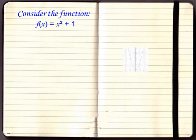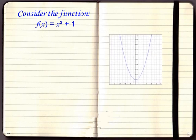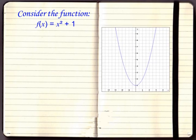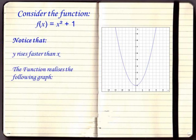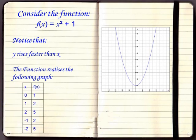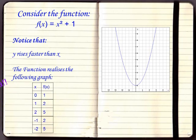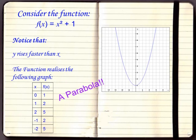Here's a simple function: f(x) equal to x square plus 1. We can see it's a parabola. We can also notice some properties of this function. For example, y rises faster than x and here are some sample points. So at 0 it is 1, at 2 it is 5, at minus 2 also it is 5, and so on. All these properties we capture in this graph.